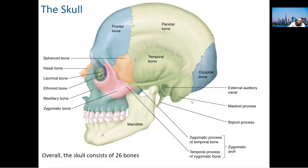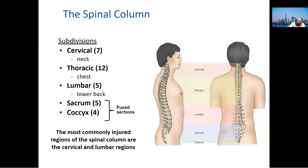These are the bones you need to know. Everything else is optional — zygomatic bones in the cheek, for example. We've discussed the vertebral numbers before; this is probably the last time I'll focus on them. Know the numbers, know the words, know where they are. New information: the most commonly injured parts of the spine are the cervical and lumbar regions.